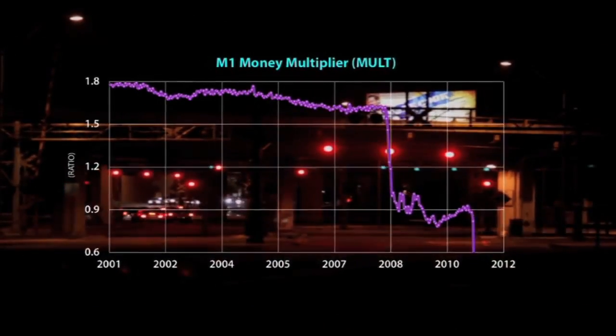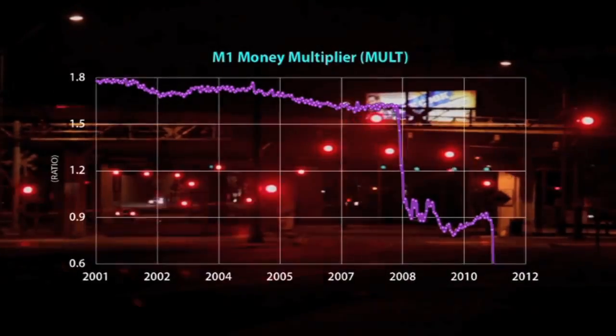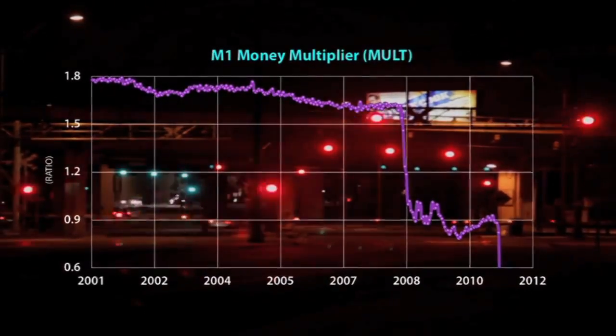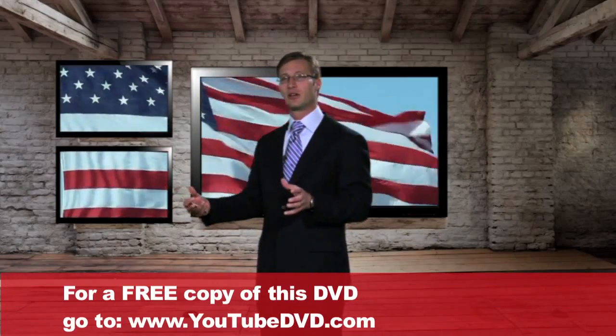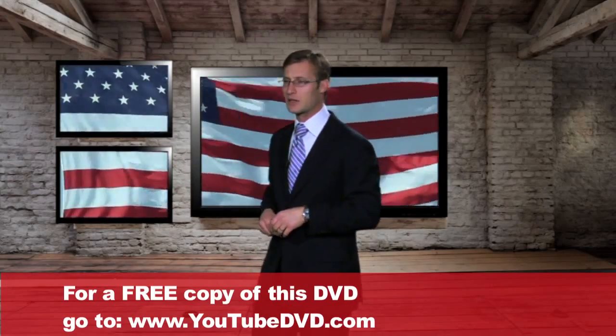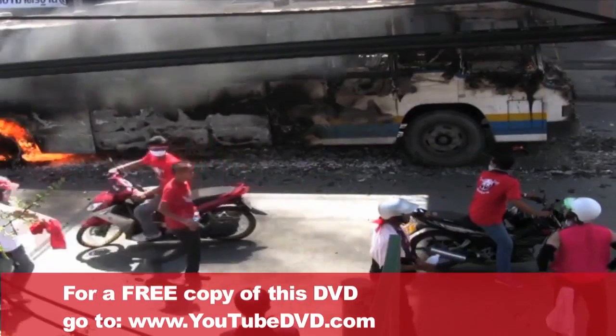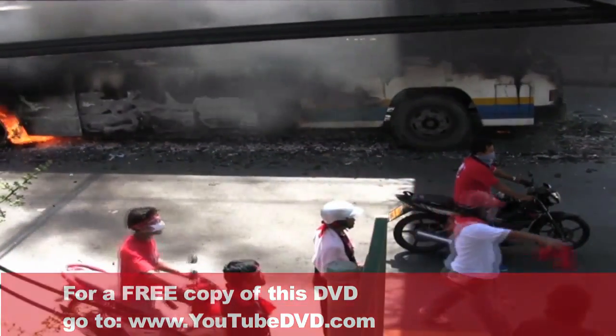We have an expansion of the monetary base and a collapse in the M1 money multiplier — or velocity, different but similar. As you can see, it's a collapse in the money multiplier, and you end up with super inflation should the Fed not take back that liquidity fast enough.